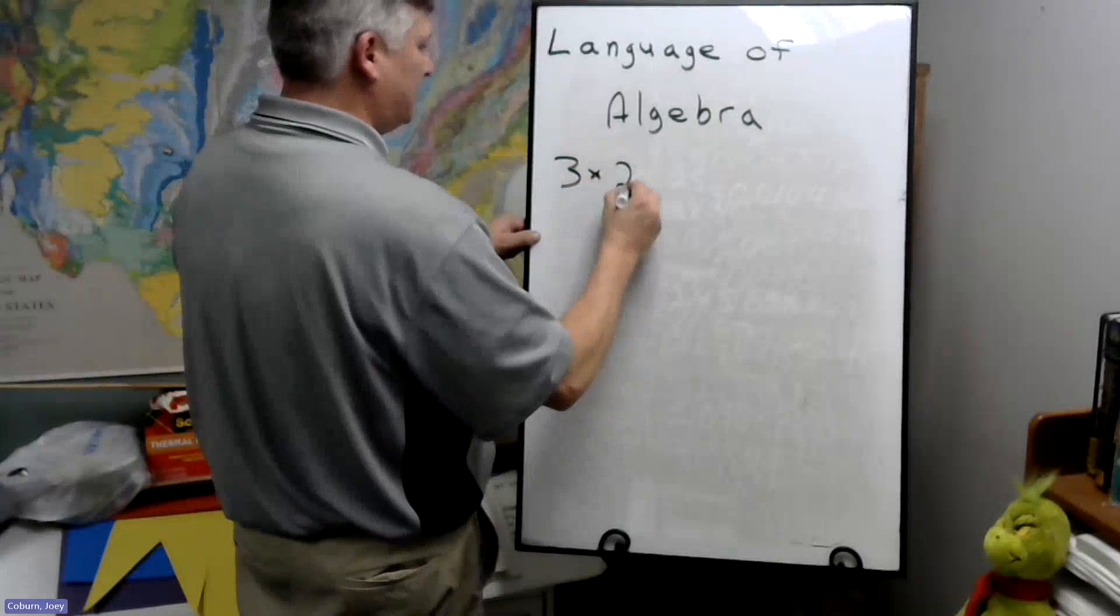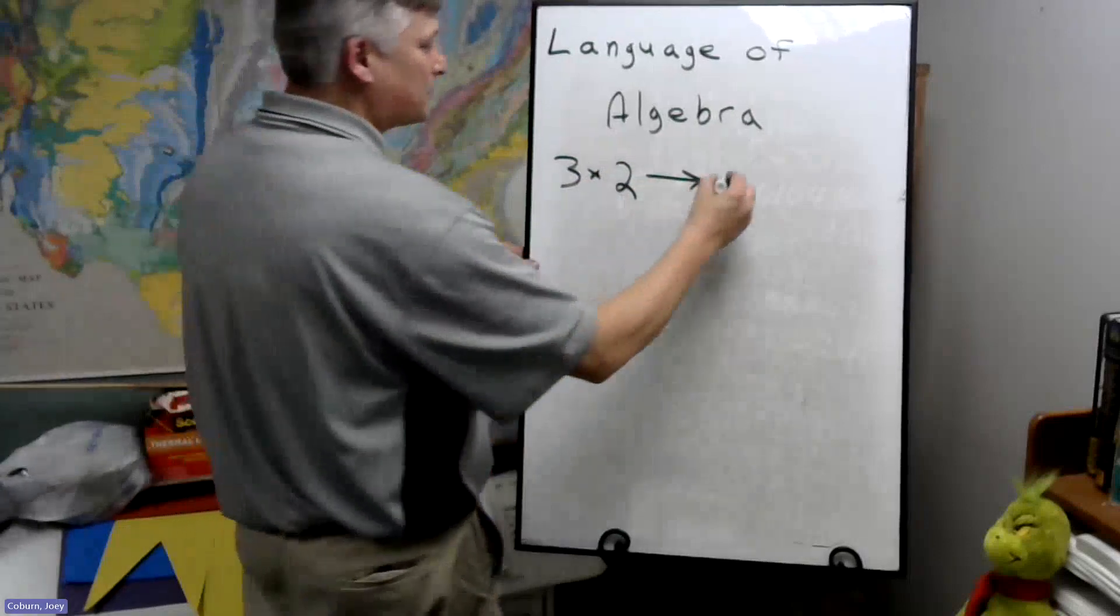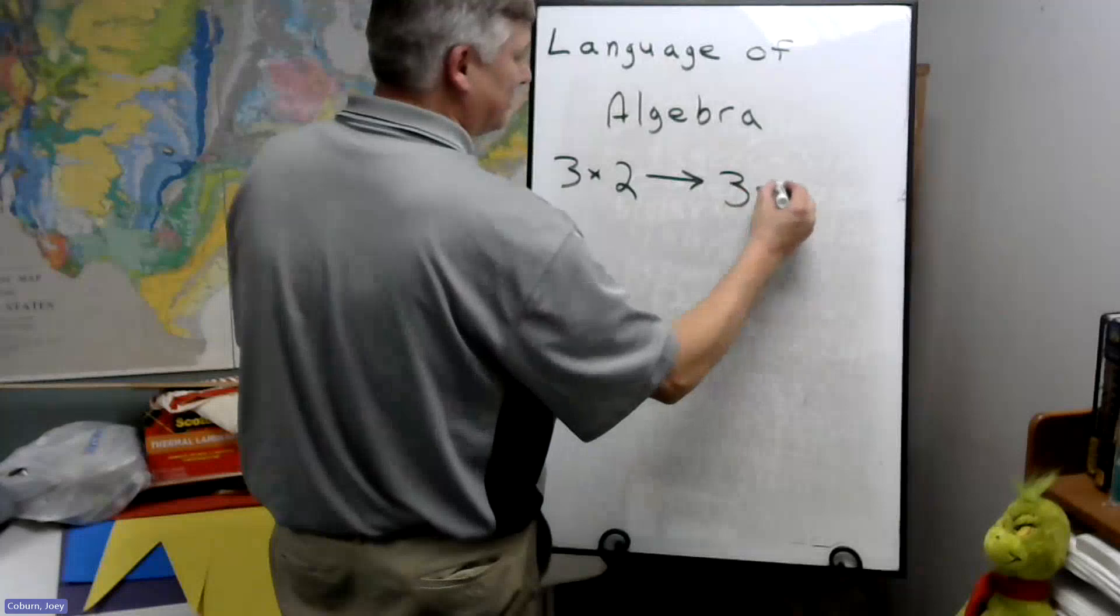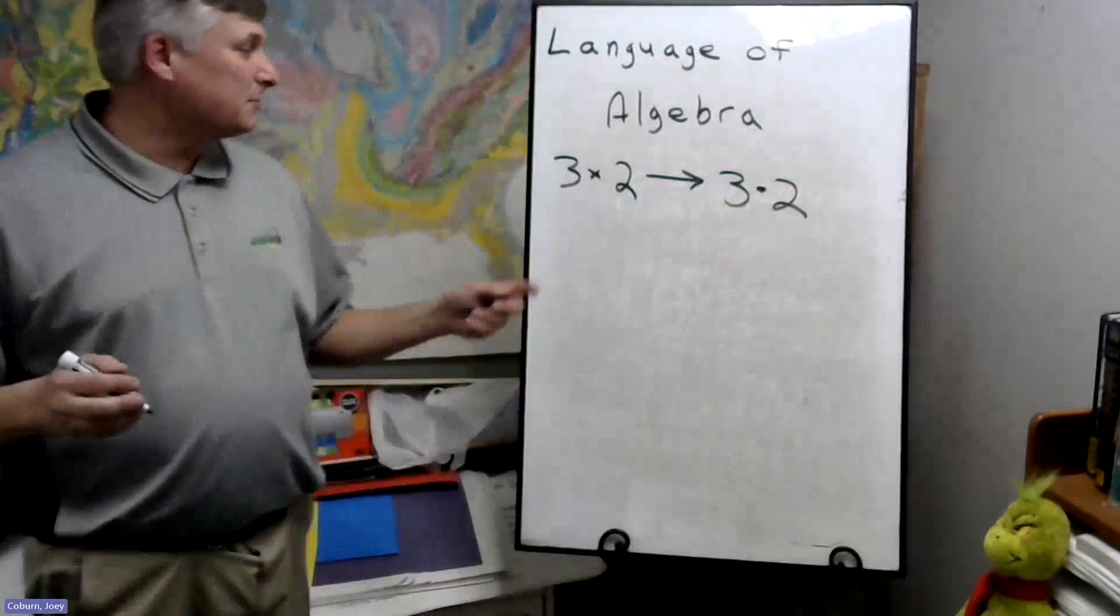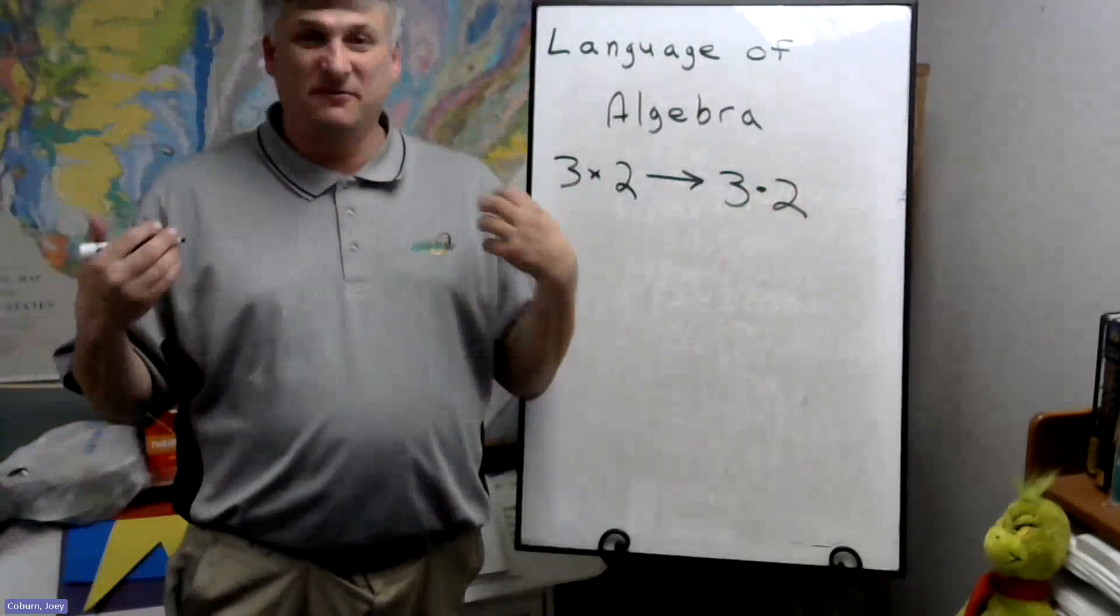So if you have 3 times 2, this now is represented with a dot. And again, the reason is that we're going to be using this X as a variable.